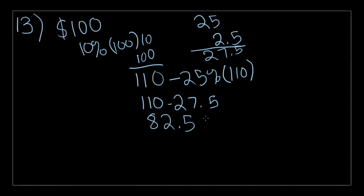Now what is 82.5 dollars compared to 100 dollars? Well, it's 82.5% since we're using the number 100. And so that is choice number C.